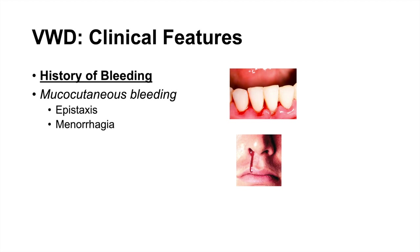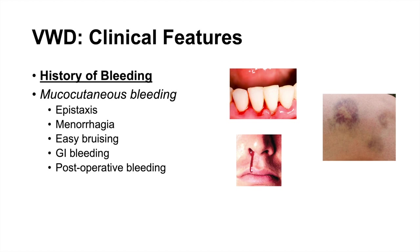This family history of menorrhagia can be a clue to diagnosing von Willebrand disease. Other features include easy bruising, GI bleeds, post-operative bleeding, and immediate bleeding after trauma — which distinguishes it from other bleeding disorders that generally have bleeds a little bit after a trauma.